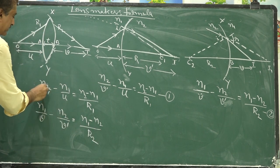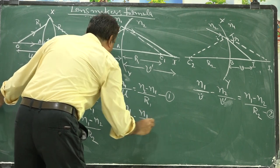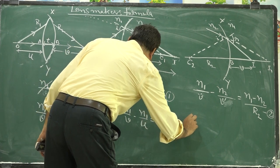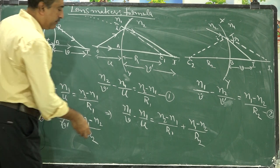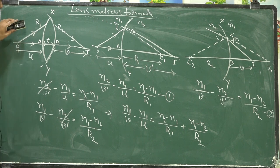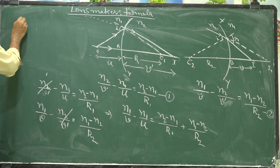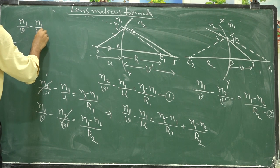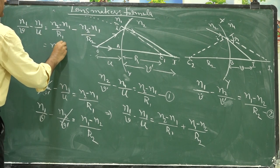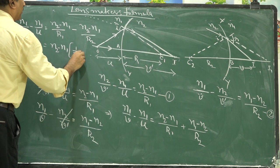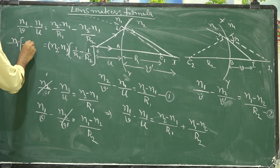Adding the two equations for both surfaces, the V' terms cancel. We obtain: N1/V minus N1/U equals (N2 - N1)/R1 plus (N1 - N2)/R2. This can be rewritten as N1/V minus N1/U equals (N2 - N1) times (1/R1 minus 1/R2).